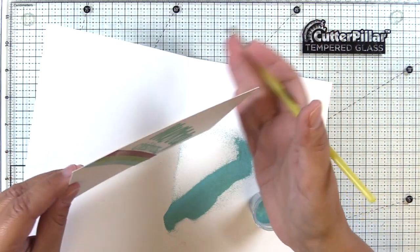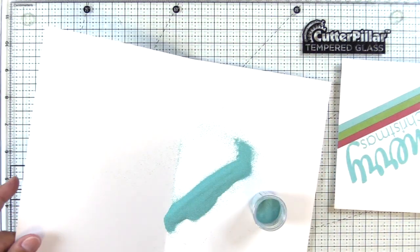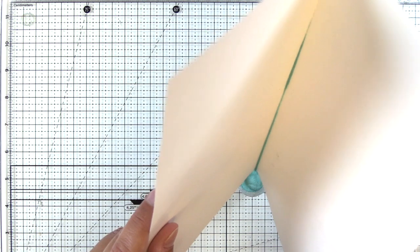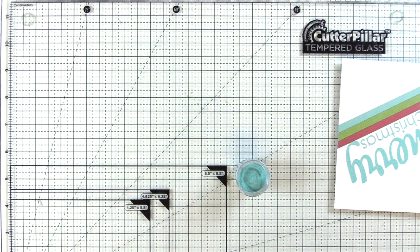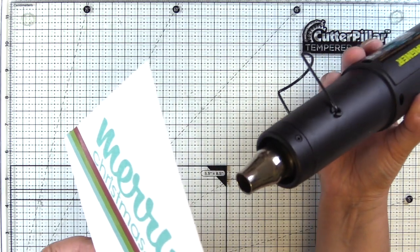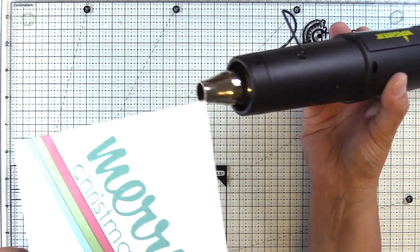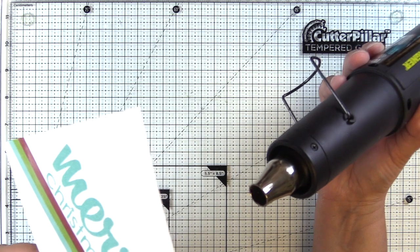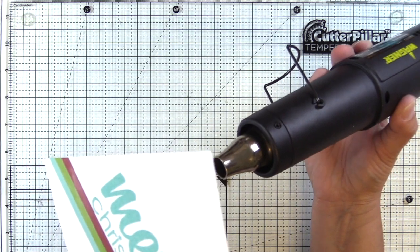The trick with your opaque embossing powders from Wow—those are the ones that I have experience with, I can't really speak to too many of the other ones—but with your opaque embossing powders, they have a white base to them. So if you overheat them you are going to see some of that white come through.